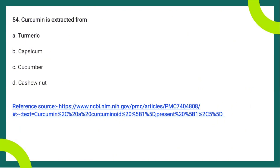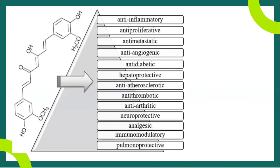The next question is: curcumin is extracted from — the answer is turmeric. Curcumin is a curcuminoid that comprises about 1.5 to 3 percent of the rhizome of turmeric. It is also known as diferuloylmethane and is a yellow-pigmented powder. The properties of curcumin include anti-inflammatory, anti-proliferative, anti-metastatic, anti-angiogenic, anti-diabetic, hepatoprotective, anti-atherosclerotic, anti-thrombotic, anti-arthritic, neuroprotective, analgesic, immunomodulatory, and pulmonoprotective effects.